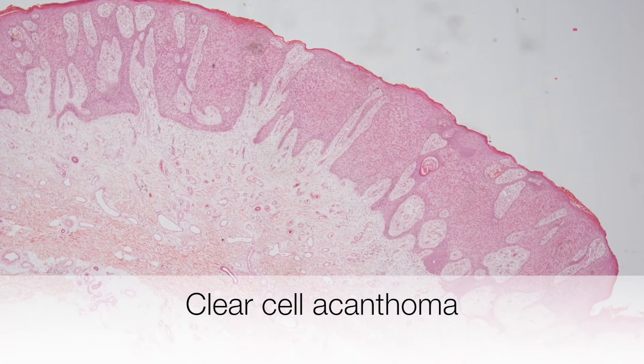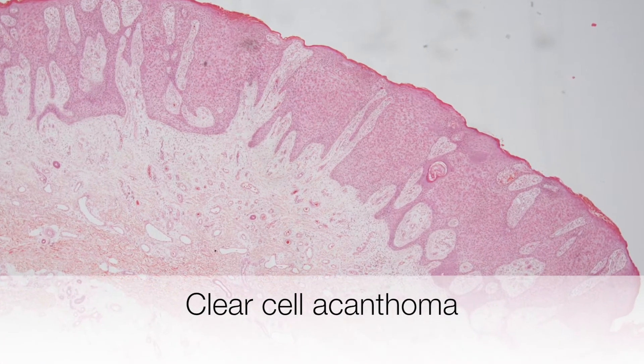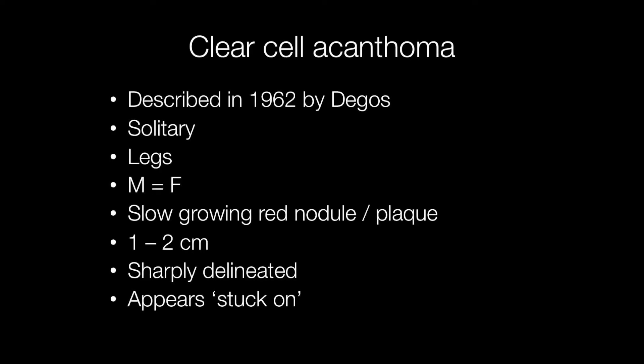This is a low-power view of a skin lesion called a clear-cell acanthoma. The lesion of clear-cell acanthoma was first described in 1962 by a chap called Degos. Clear-cell acanthomas are slow-growing red nodules or plaques that are sharply delineated and appear as if they've been stuck on.